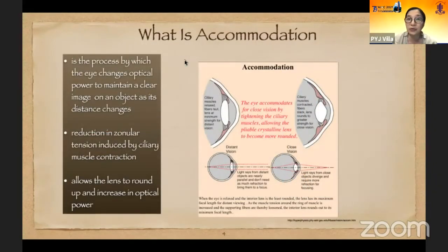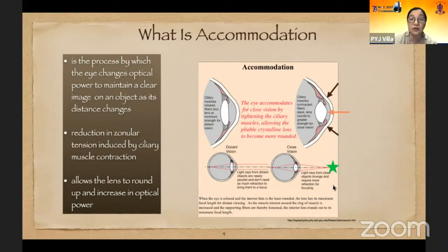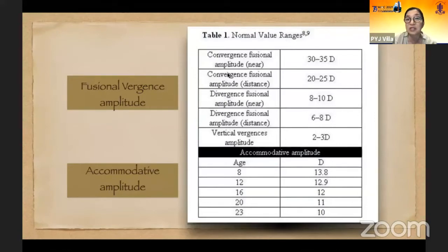Just a quick review — what exactly is accommodation? This is a process by which the eye changes optical power to maintain a clear image on an object as its distance changes. There is a reduction in the zonular tension induced by ciliary muscle contraction, allowing the lens to round up and increase optical power. When looking at a very near object, light rays from close objects diverge and require more refraction for focusing. The divergence fusional amplitude is much lesser compared to the convergence fusional amplitude, and as we get older, the accommodative amplitude becomes less and less.